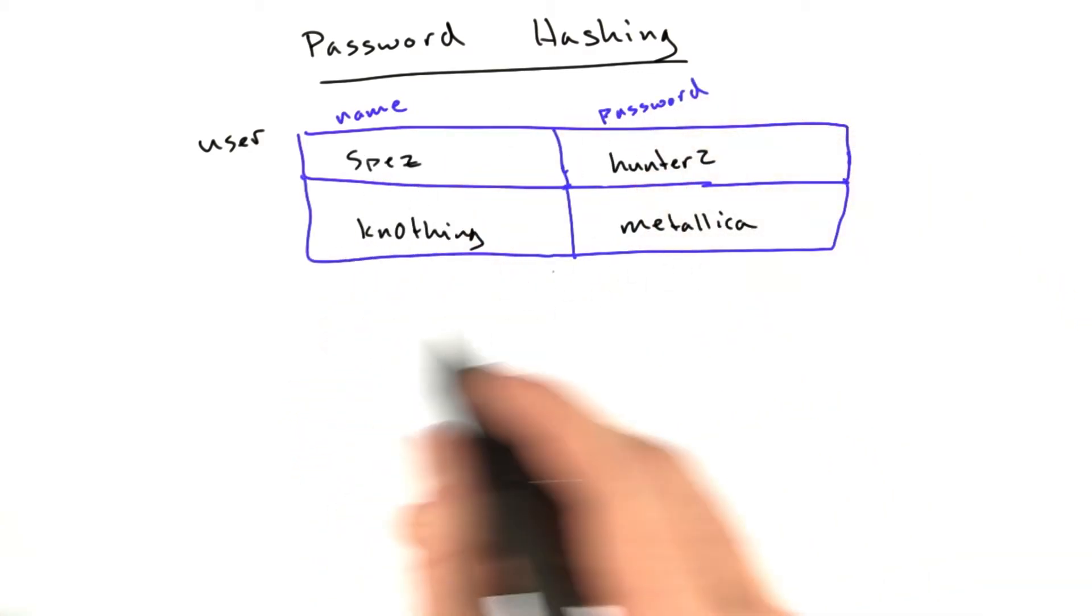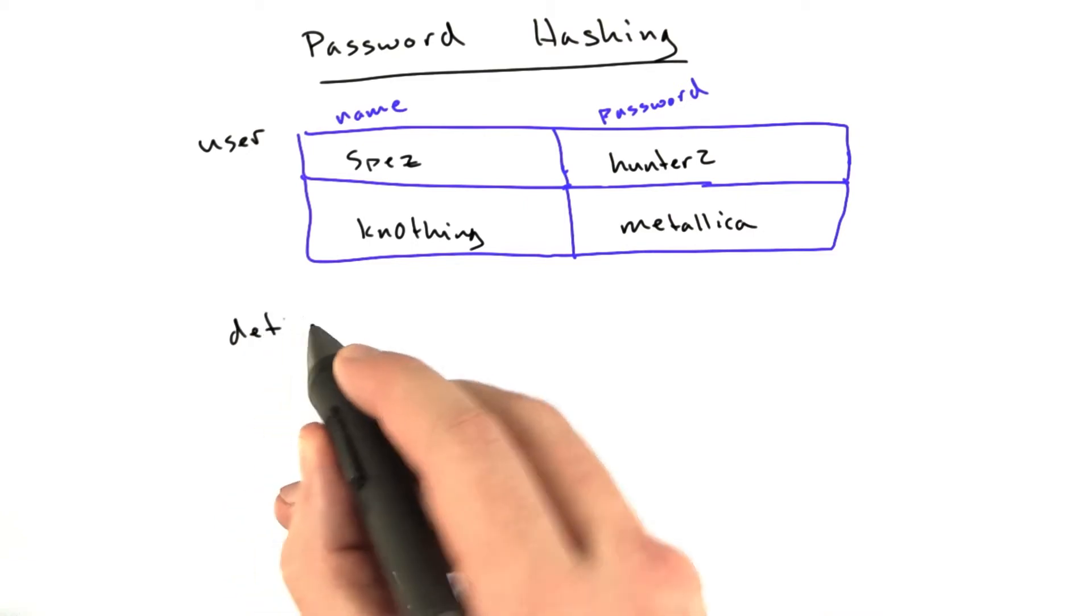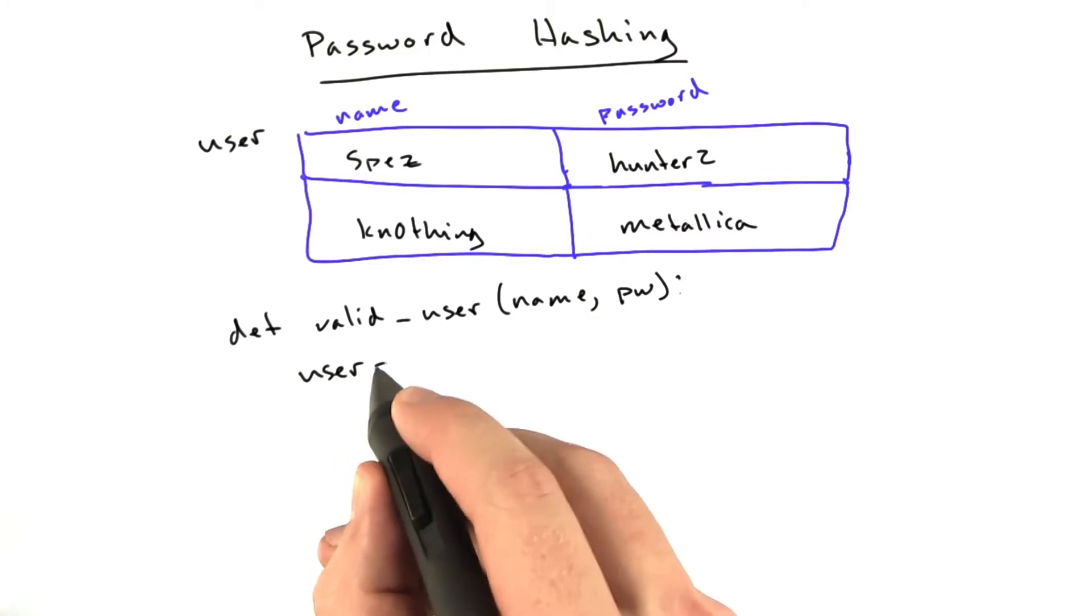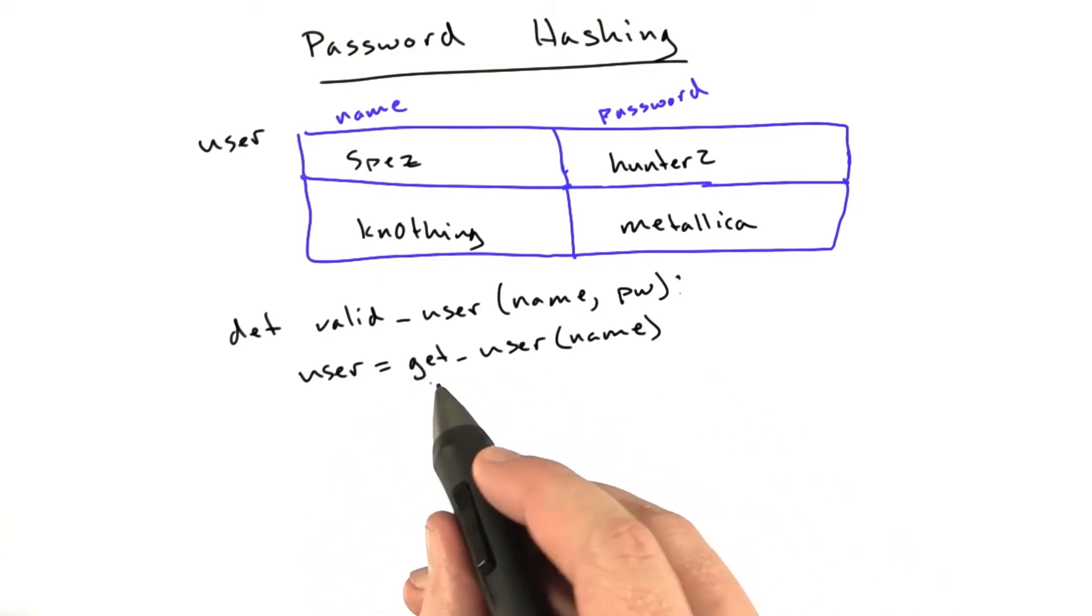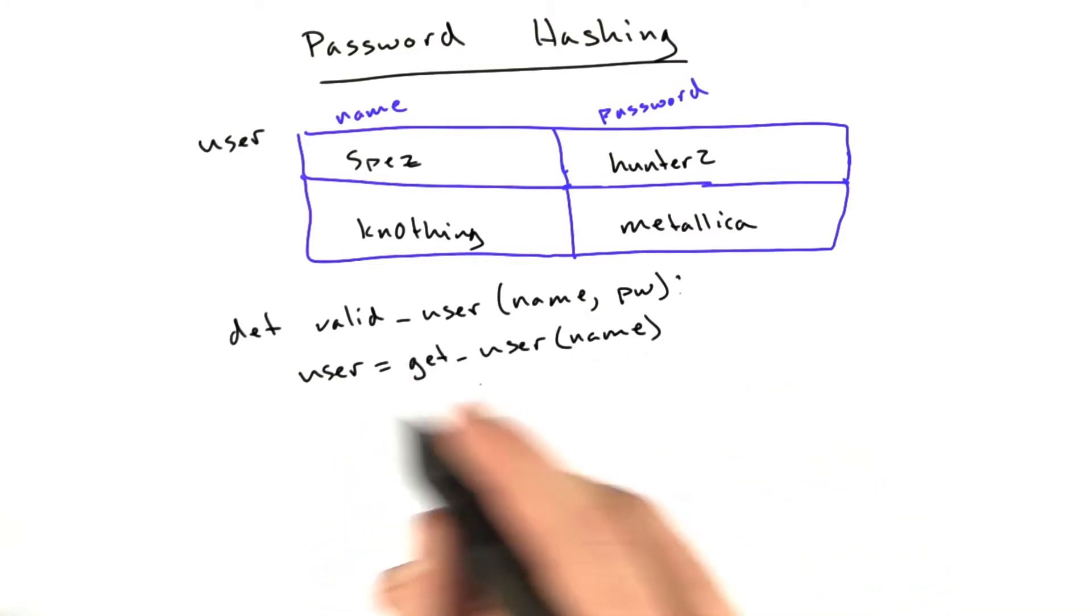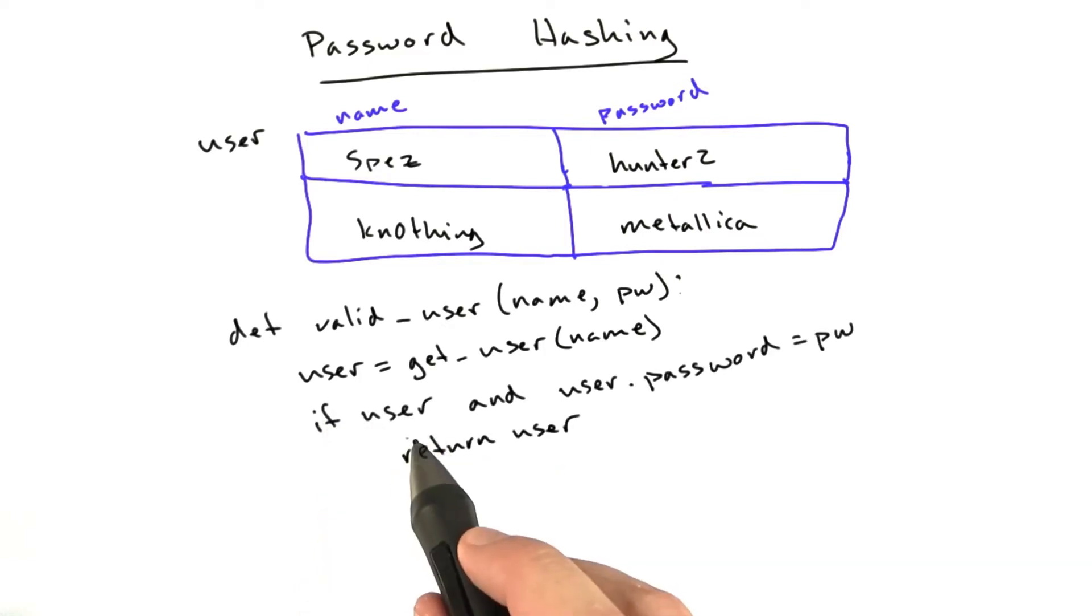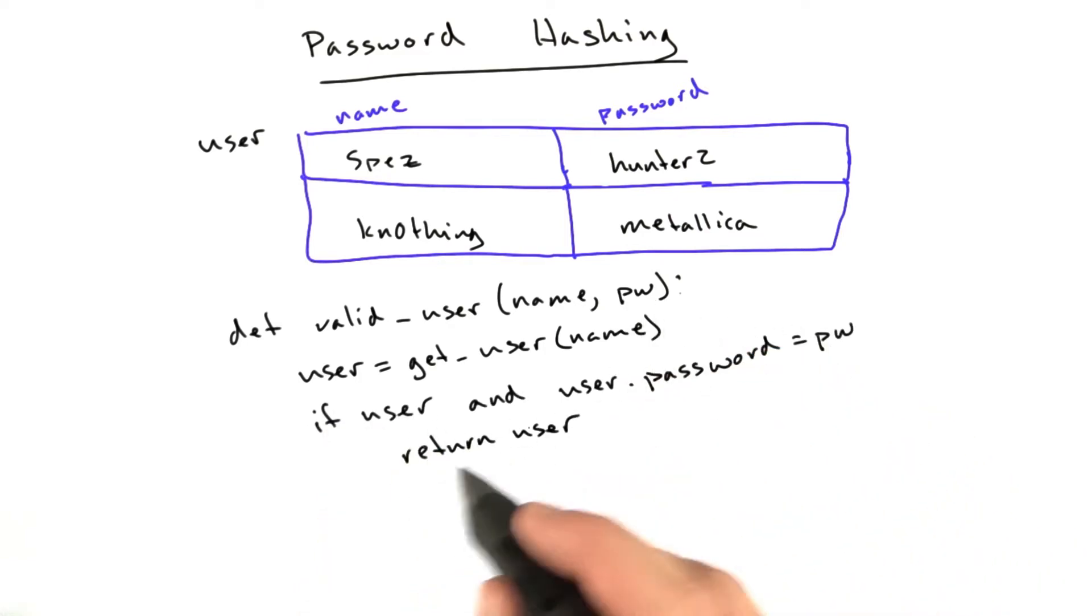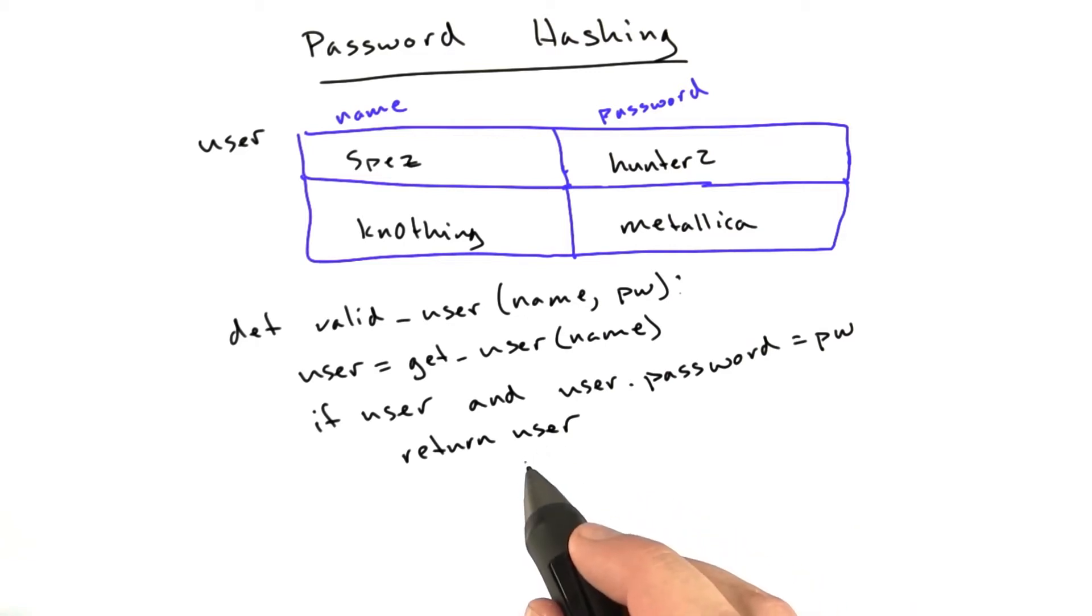If we wanted to verify a user is valid, we might have a function that looks like this. This would be called when somebody logs in, and it would probably say user equals get user, where this is some function that gets the user from the database. And then we'd say, if this user exists and this user's password equals pw, what was passed in, return user, and that's simple enough.